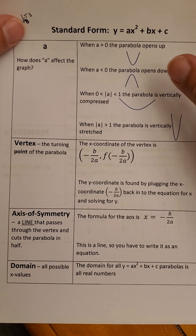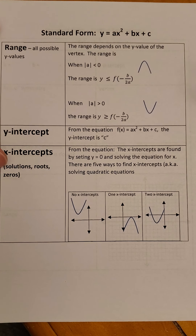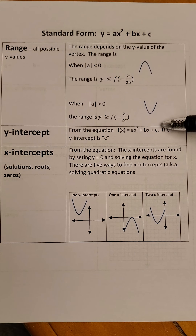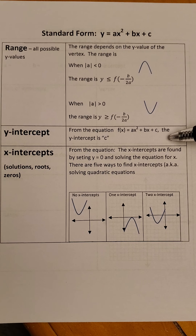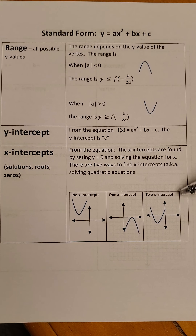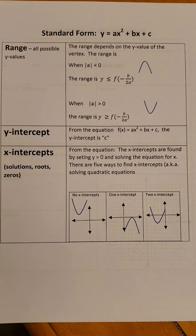The domain we've already talked about — that hasn't changed. The range, once we have it graphed, is going to be super easy. Also new: C is the Y-intercept, which is nice, because when we look at the equation in standard form we can see the Y-intercept right away — a point we can graph immediately. For solving, we'll save that for next chapter, but if I see X-intercepts hitting the grid at a really clean place — not like 1.378 — I will point that out.